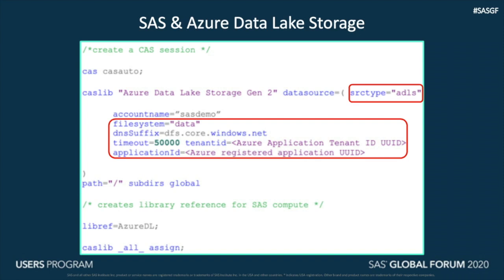File system is analogous to a schema in RDBMS — here it is set to 'data'. Tenant ID would be the ID set up for your organization or a team in an organization, depending on whether there is just one Azure account for the whole organization or each team. Then the application ID, which would be an application registration ID in Azure — typically, this identifies which application from the organization is trying to access the Azure Data Lake Storage. Path here is set to look from root with a backward slash.